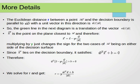The Euclidean distance r between a point x and the decision boundary is parallel to the weight vector. The unit vector in this direction is w over the magnitude of that vector.